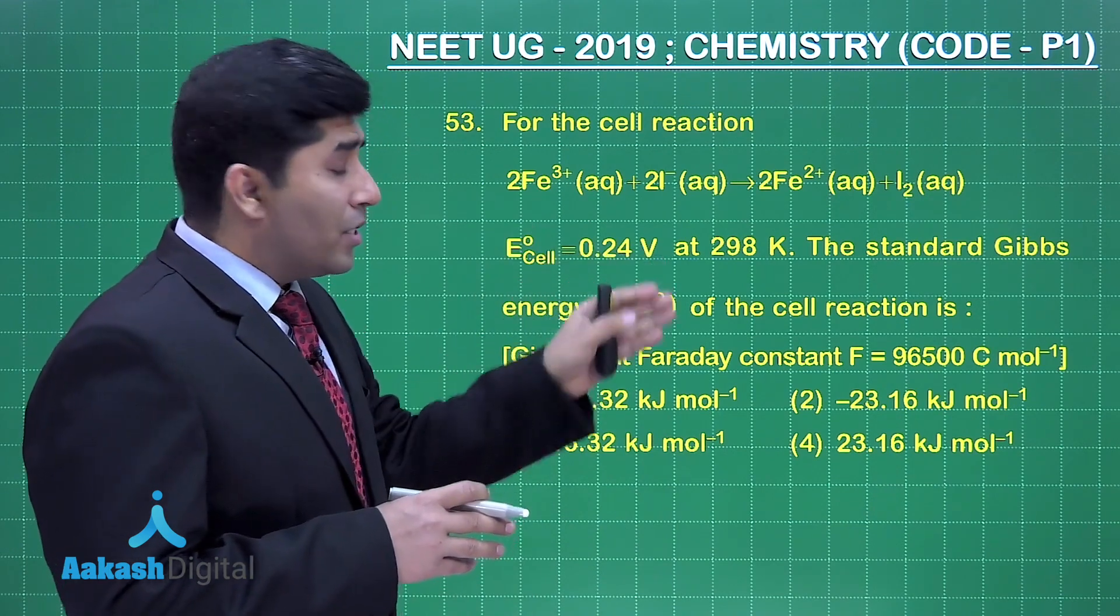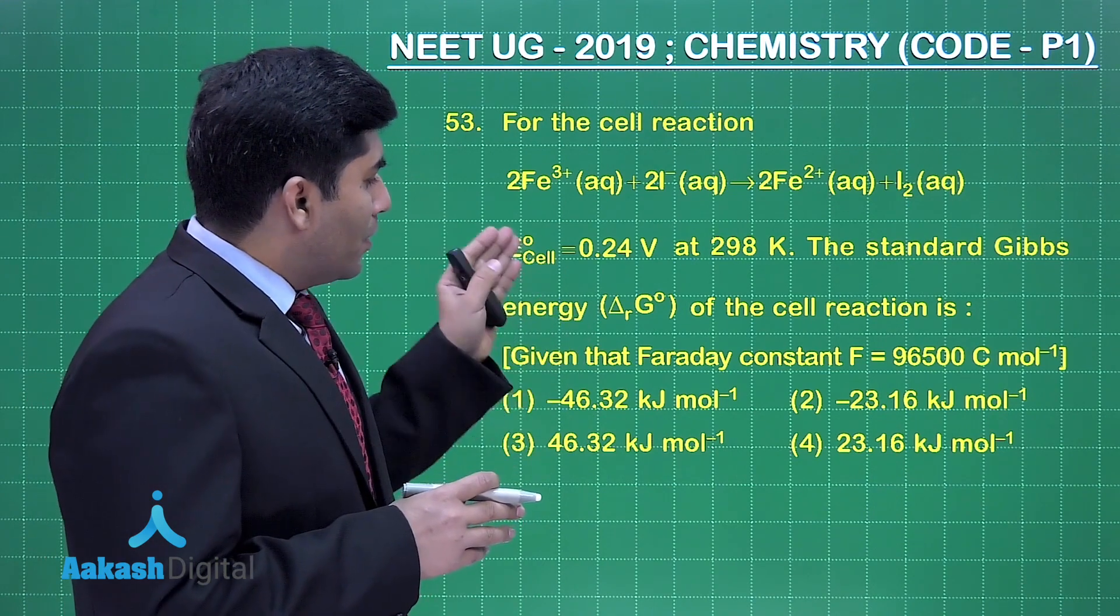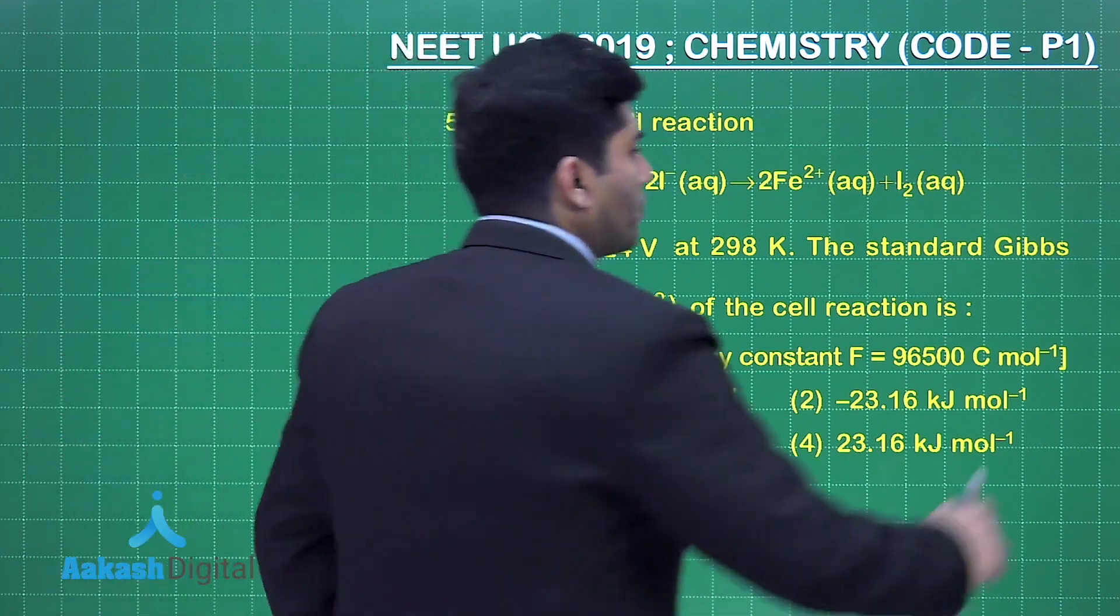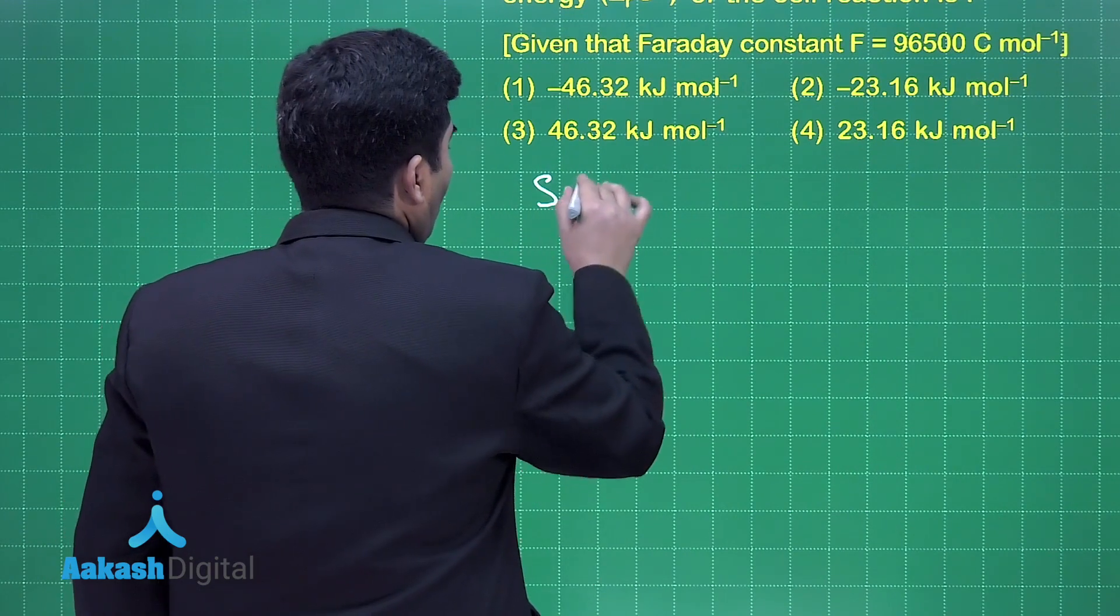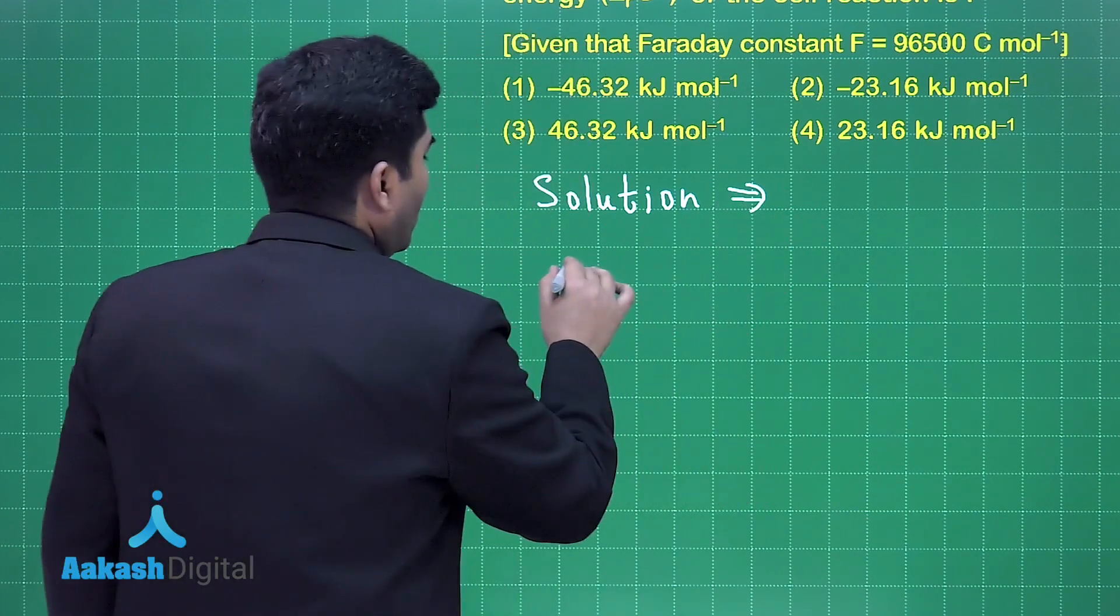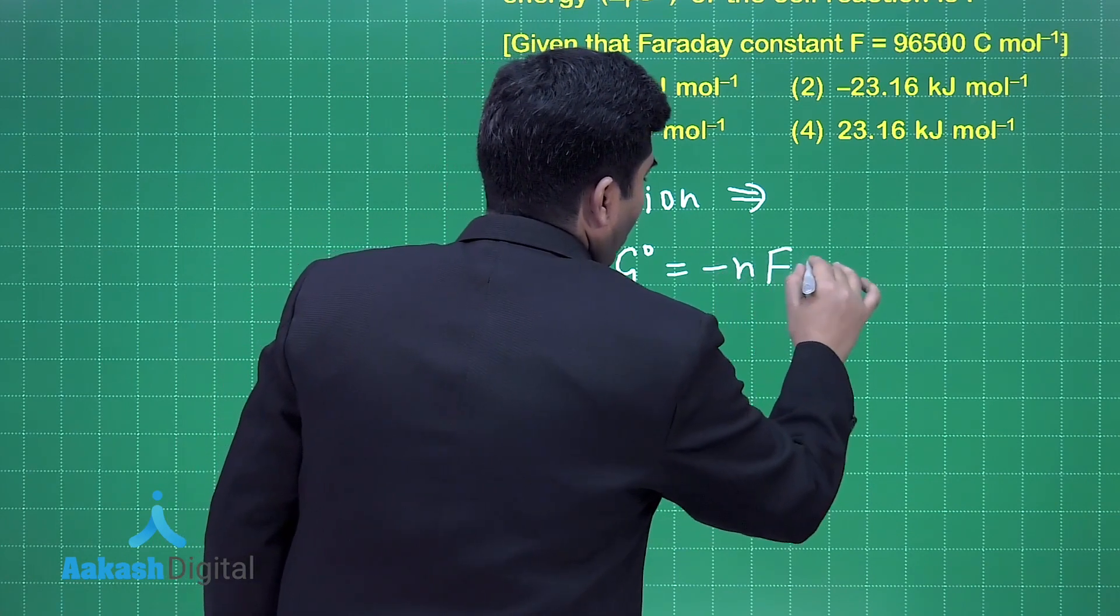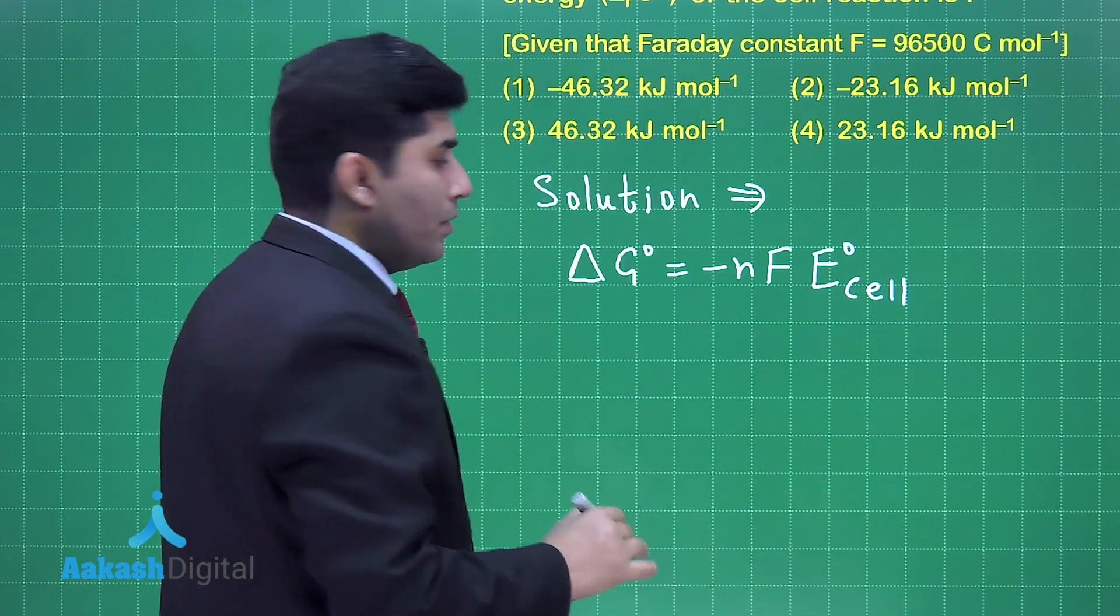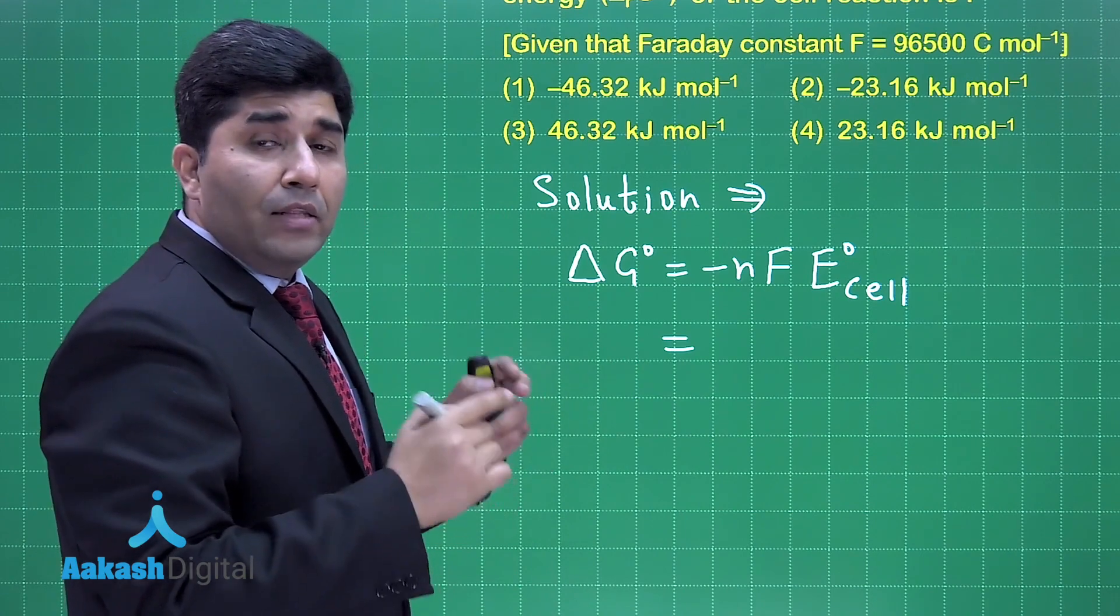Now for the cell reaction, he is asking the value of ΔG°, and it's given that the Faraday constant F is equal to 96500 coulomb per mole. Let's find the answer. Now, we know that ΔG° is equal to minus nFE°cell. Right? Now, what is n? The number of electrons transferred in the reaction.